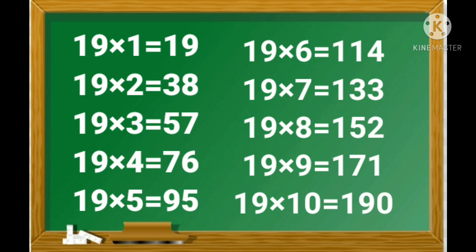Again, 19 ones are 19, 19 twos are 133, 19 eights are 152, 19 nines are 171, 19 tens are 190.